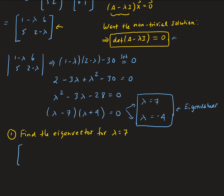Substituting lambda equals seven: one minus seven gives negative six, then six; five, and two minus seven gives negative five. So our matrix is: negative six, six, five, negative five. We have our homogeneous system, and now we need to find its null space.